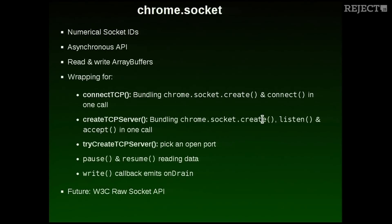BitTorrent is about high bandwidth of data, so I needed flow control, and that's why I replicated the pause and resume logic known from Node.js streams. And on the outgoing side, I've got the drain event that is only emitted when there's no further write pending. In the future, we will have a nice encapsulation being standardized as the raw socket API, which is quite misleading because this is not about raw sockets, but still about TCP and UDP.